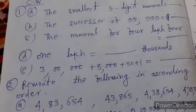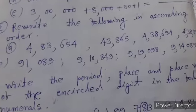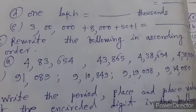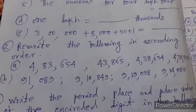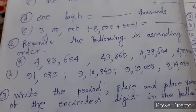Write in short numerals. Question number 2: Rewrite the following in ascending order: 4,83,684, 43,865, 4,38,654.